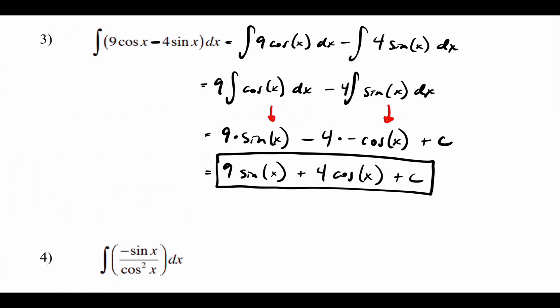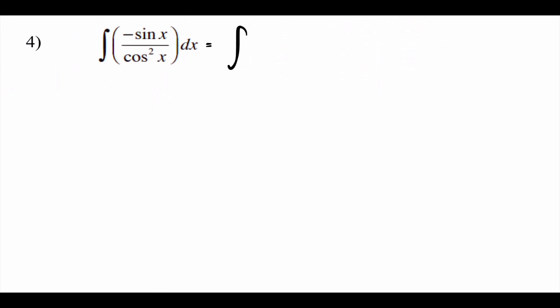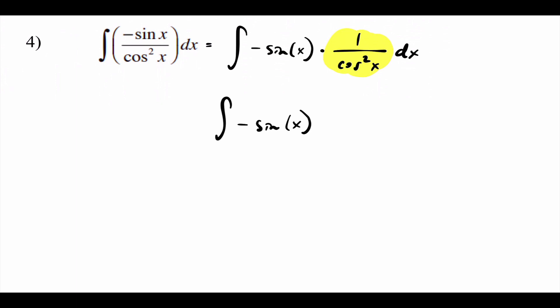Number four is a fraction again, and we don't have a quotient rule. Breaking it apart: negative sine of x times one over cosine squared of x. We've seen this — one over cosine squared is secant squared — so it becomes negative sine of x times secant squared of x. Let's see if that works.